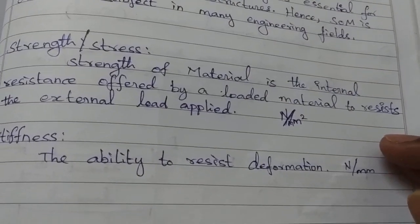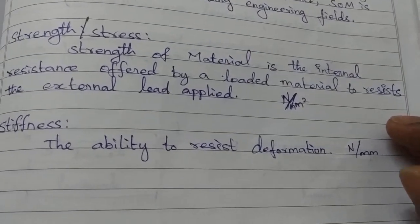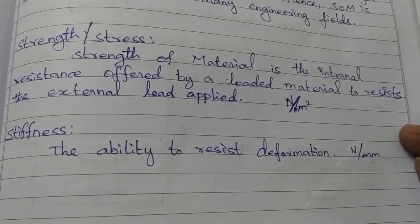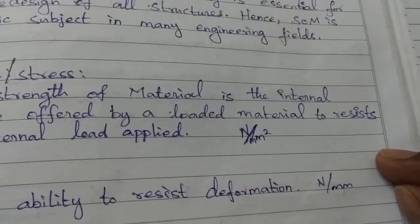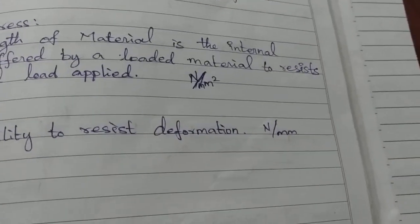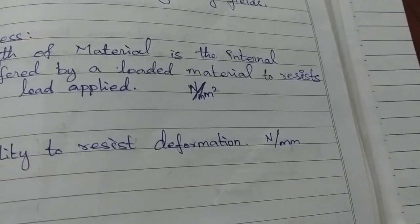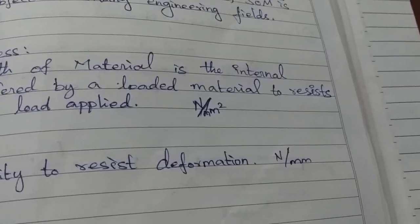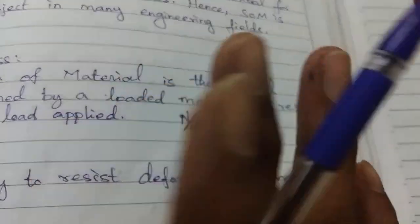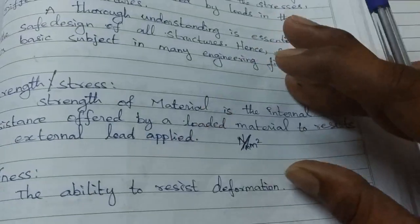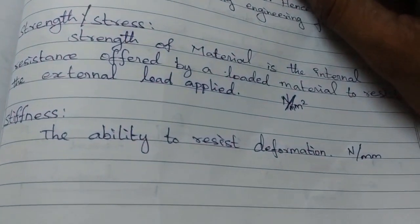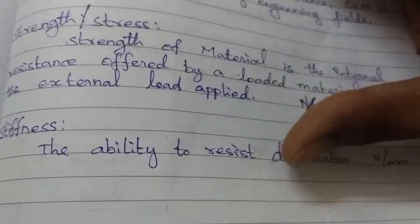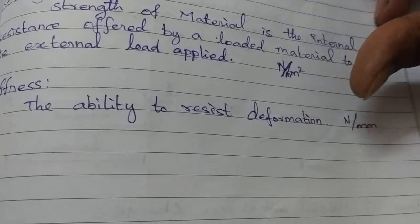First definition: strength of material is the internal resistance offered by a loaded material to resist the external load applied. You use a beam and apply the load, and the material must resist that load. The stress unit is newton per mm², and the stiffness unit is newton per mm. Stress and stiffness are different.